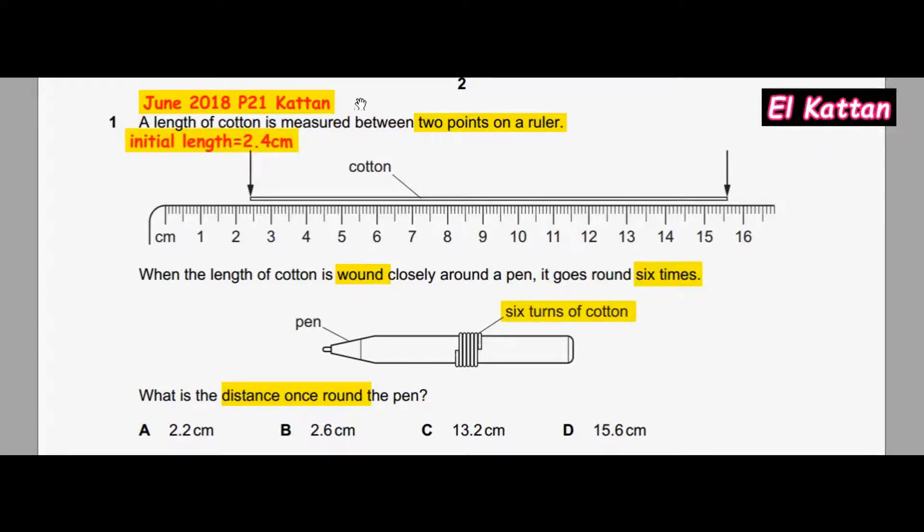Initial length: 2.4 centimeters. Final length: 15.6 centimeters. The shaded distance between the initial and final length represents the length of the cotton.